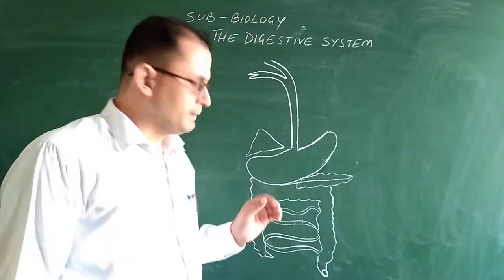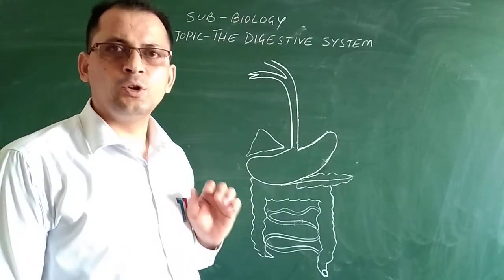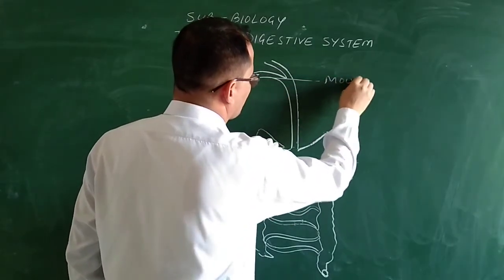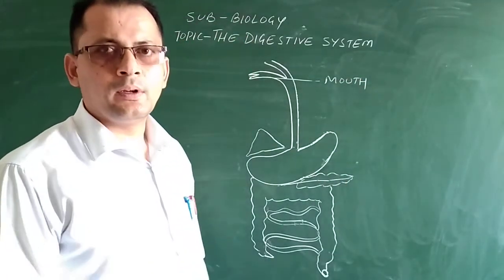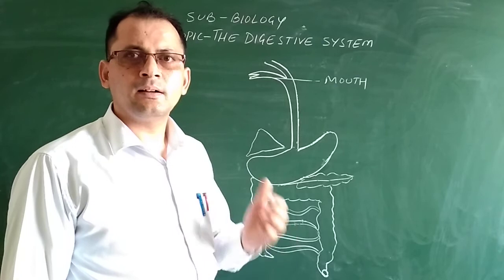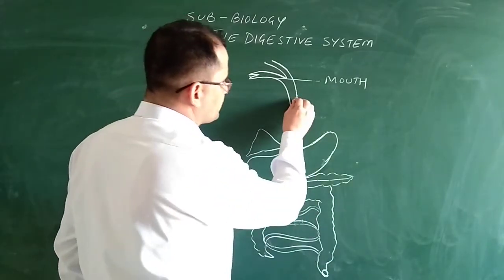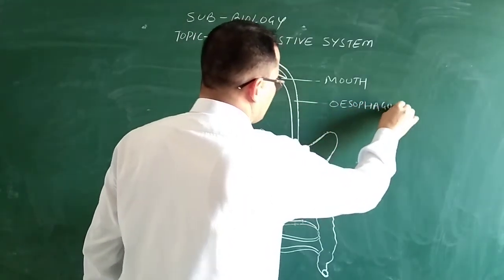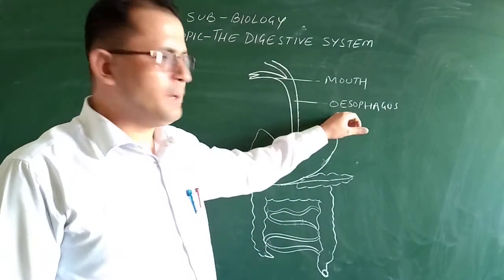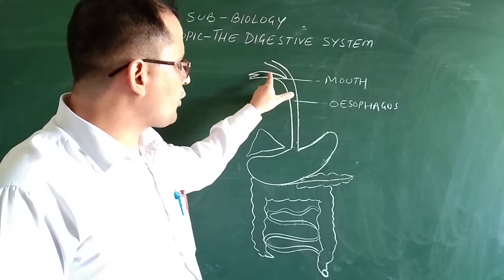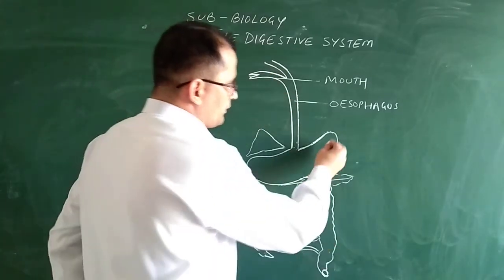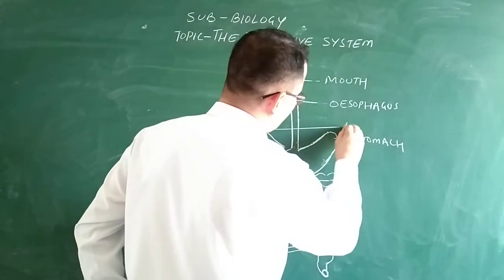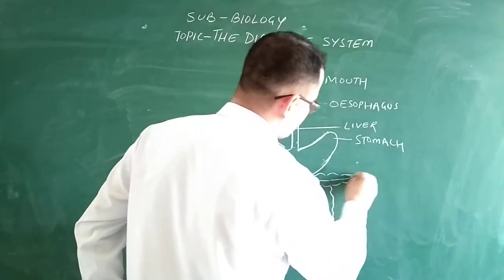Now you can see the digestive system of the human body in this diagram. This portion is the mouth, from which we take in food. The mouth contains the tongue, teeth, and salivary glands. This is the esophagus, or food pipe — it carries the food down from the mouth to the stomach. And this is the stomach. This is the liver, and this is the pancreas.